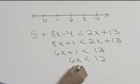Now we need to divide both sides by 6. This leaves us x is less than 2. So the solution to the inequality is x is less than 2.